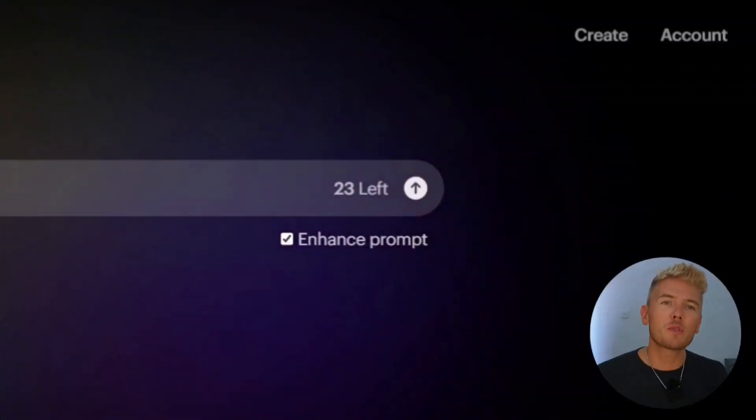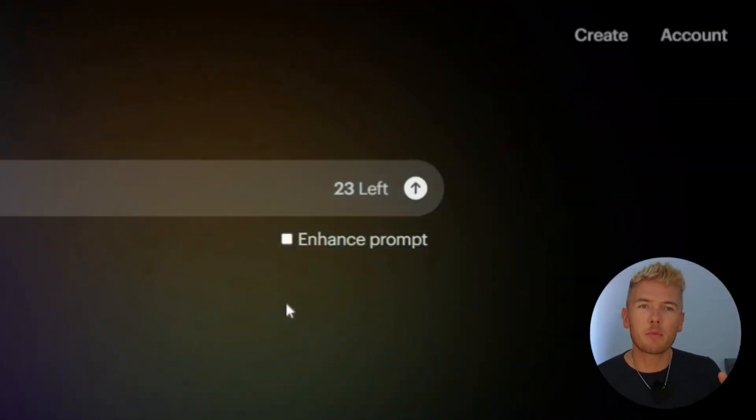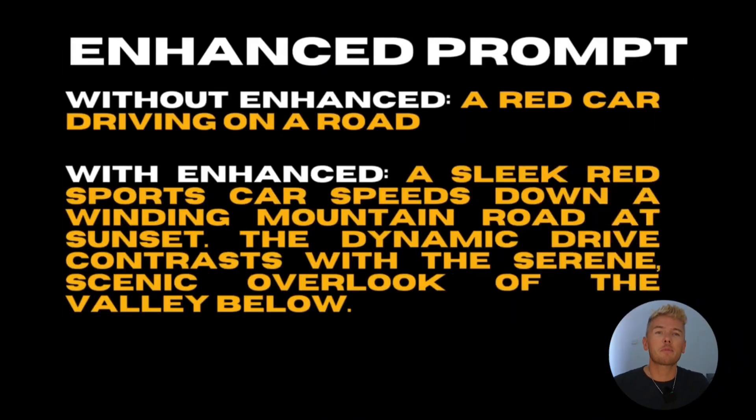Tip three: turn off the enhanced prompt if you want better control. You can do this by unchecking the box under the input bar. It stops the AI from adding additional descriptions to your initial prompt. Sometimes with enhanced prompt turned on, camera movements appear that you didn't ask for or movements that simply don't follow your prompt. Just remember that if you turn off enhanced prompt, most of the effort of creating the description is now on you.